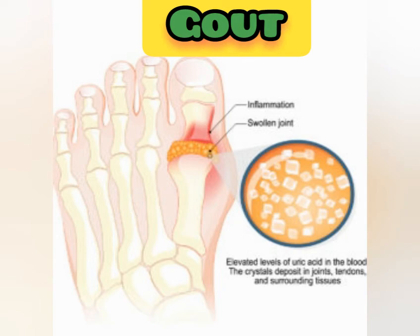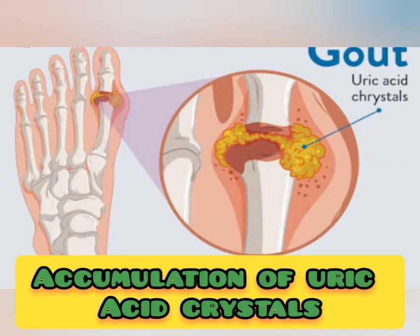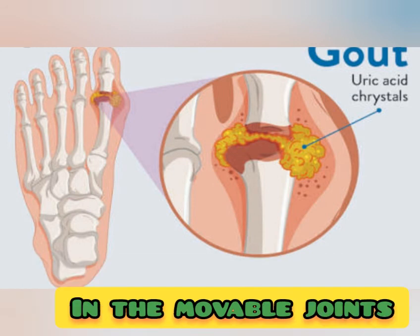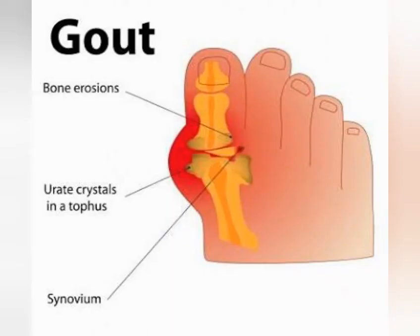The third type is gout. Gout basically occurs due to the accumulation of uric acid crystals in the movable joints. The crystals of uric acid deposit in the movable joints and cause gout, which generally attacks the toe joints. This concludes our discussion on the disorders of the skeletal system.